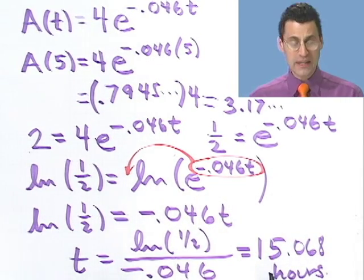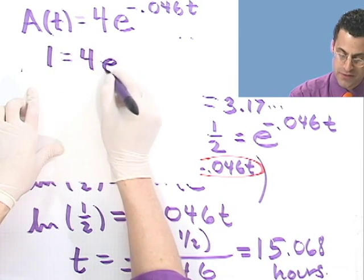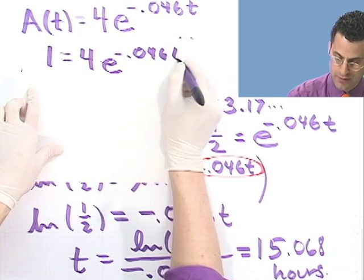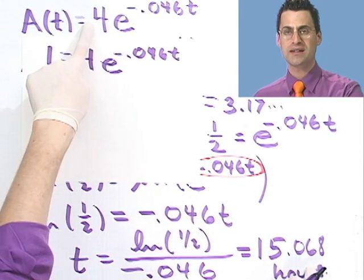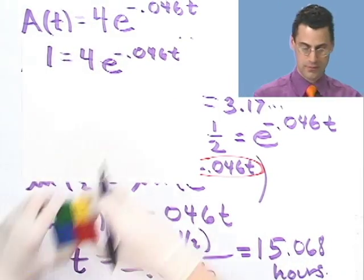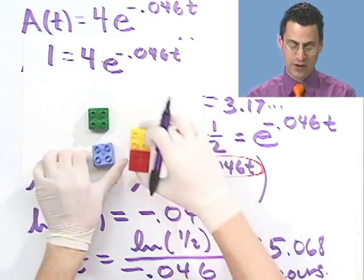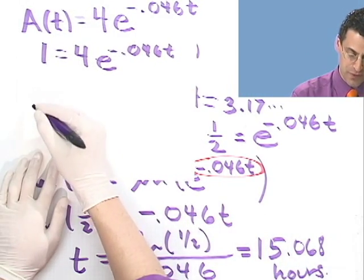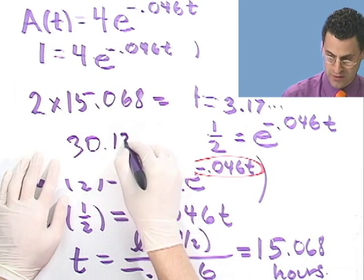We found the half-life. Now here's a bonus question: how long would we have to wait in order to have 1 microgram left? There are two ways to do this. One is to set a equal to 1 and solve for t using logs, just like before. Or you could be a little tricky: once you know the half-life, how many half-lives do you have to wait, starting from 4, to get down to 1? One half-life gets you from 4 to 2; another half-life gets you from 2 to 1. So that's 2 half-lives — just multiply the half-life by 2, giving approximately 30.13 hours.